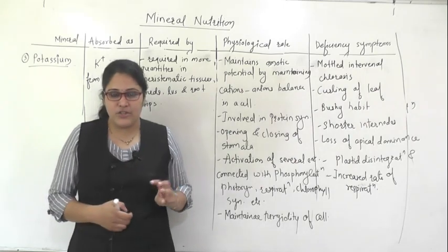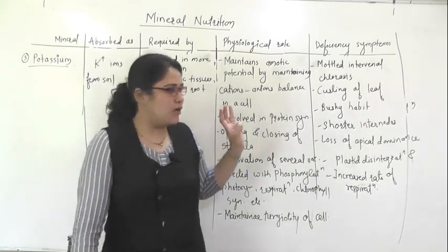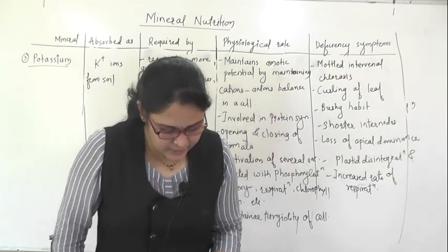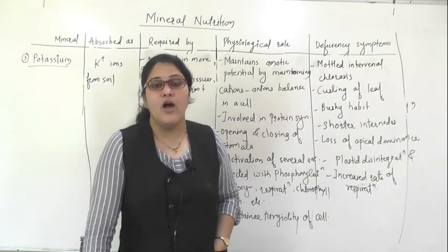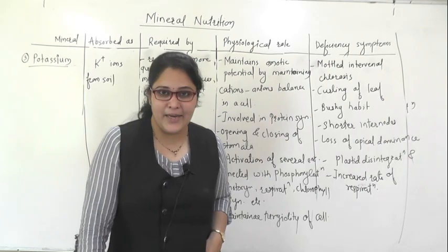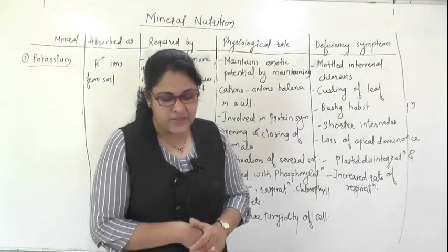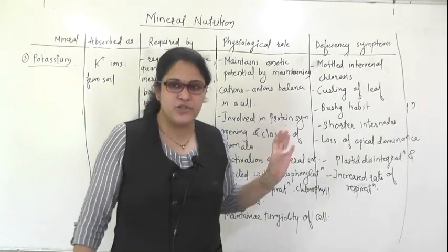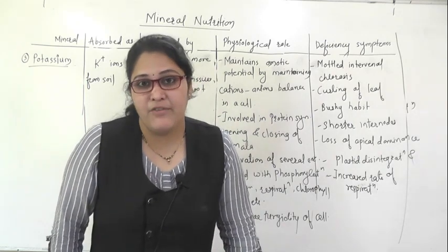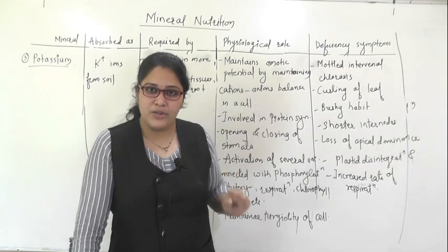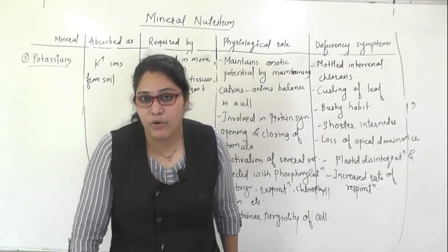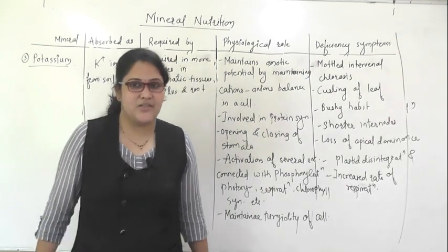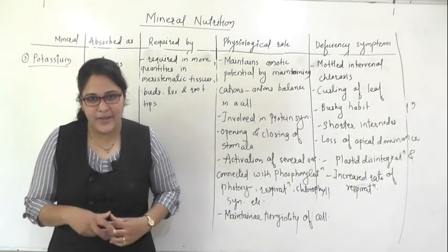Today we discussed the physiological roles and functioning of three important macronutrients: nitrogen, phosphorus, and potassium. The remaining three macronutrients — magnesium, calcium, and sulfur — along with the eight micronutrients, will be completed in the next class. Please revise this part properly. After completing all nutrients, we will study nitrogen metabolism in detail. Good day and goodbye.